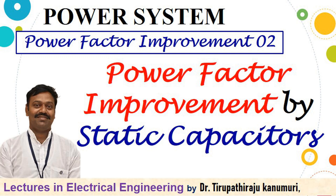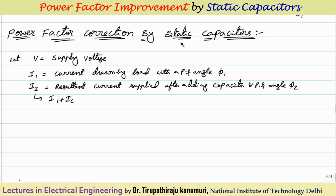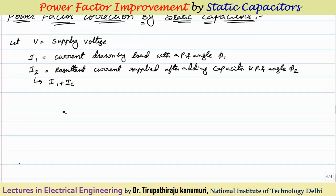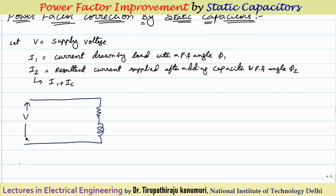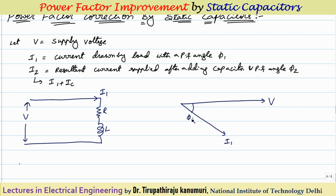Today we are going to discuss power factor correction using static capacitors. We have seen in the last class what is the need for power factor improvement and the effect of low power factor. Proceeding further, I am taking the case of an RL load. The applied voltage is V, and this RL load is drawing a current of I1. Taking voltage V as reference, the current I1 has a power factor angle of phi1.